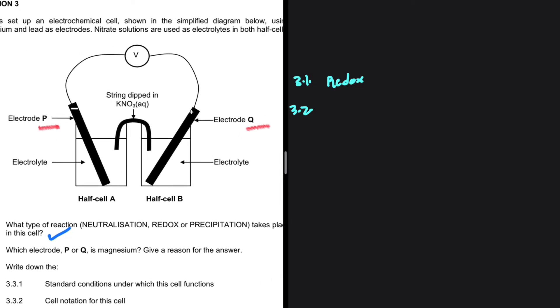In a galvanic cell, the negative electrode is where you find your anode. On the other hand, the positive electrode is where you find your cathode.